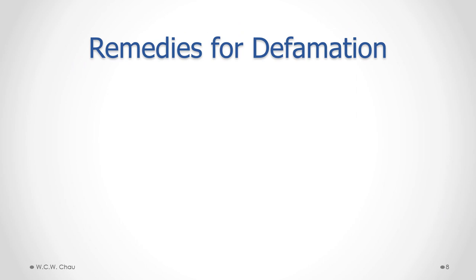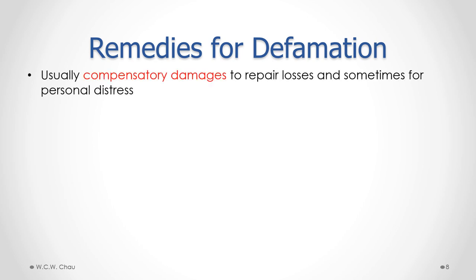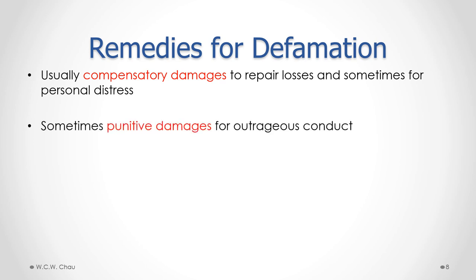If someone is successful in suing for defamation, what can they expect as remedies? The most common remedy is compensatory damages, compensating for actual economic losses such as loss of a job or business opportunities. A court may also award damages for personal distress caused by the defamation. Less common is punitive damages, which will be awarded if the court considers the defamation to be outrageous conduct — done in a horrible, outlandish manner — enough that the court wants to punish the person who committed the defamation.